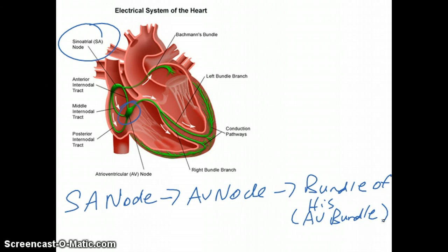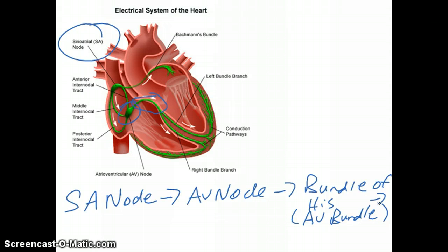This structure is not labeled on the diagram, but it travels within the septum — that is the AV bundle, or the bundle of His. From there, the electrical signal travels to the right bundle branch and the left bundle branch.